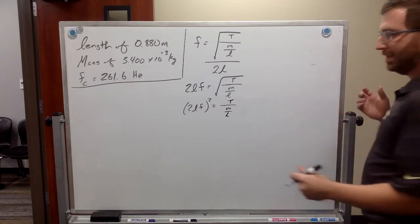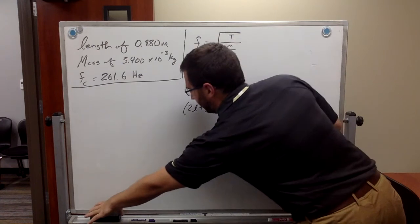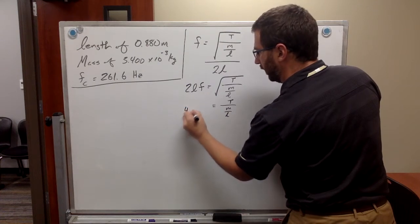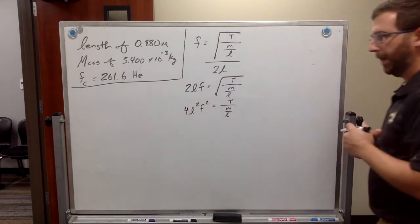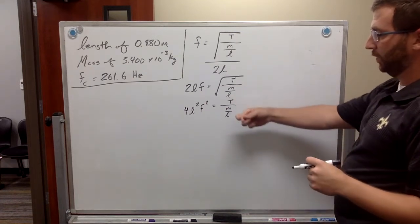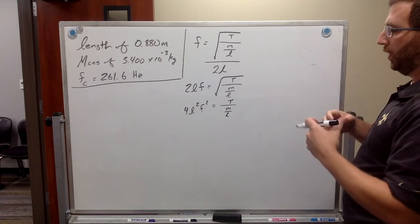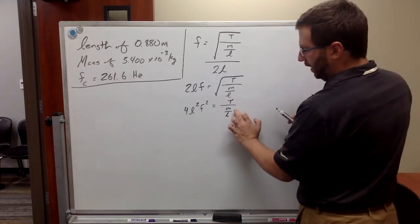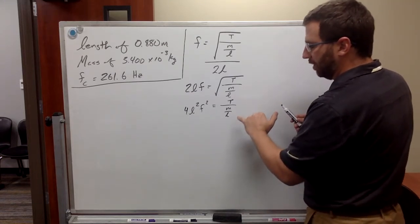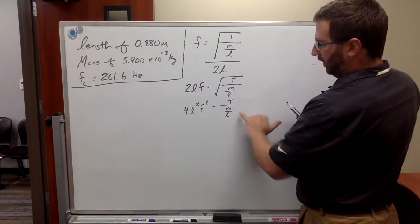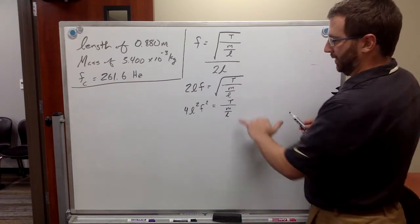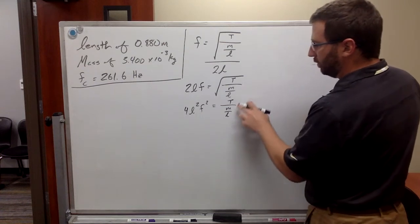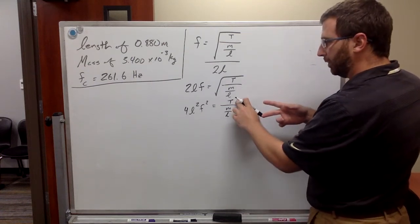Because I'm running short on space, 2LF squared, well, that's the same thing, properties of exponents, 4L squared F squared. Now, still getting T by itself, so we've got to do something with that M over L. Because we're dealing with a fraction, let's be careful with this. This M over L, so T over M over L means we have a complex fraction. To solve a complex fraction, or dividing fractions, remember, keep, change, flip. Remember that old saying? So, basically, what we're going to do, we're going to take this M over L, flip it, multiply it by this T.